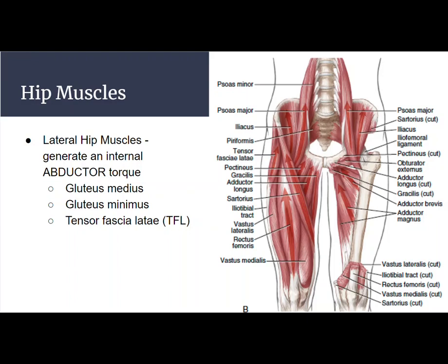We'll look at some images specifically of these hip muscles on the lateral side of the hip joint — that is why they create an abductor torque, specifically the gluteus medius and minimus. Keep those two together in your mind, and then the TFL or tensor fasciae latae.